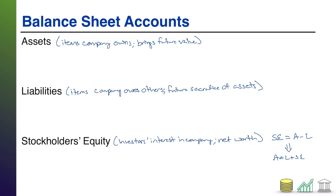So assets are things you own, liabilities are things you owe, and shareholders' equity represents the net worth of the company. The balance sheet tells investors what is the financial health of the company, specifically at a point in time — typically a quarter or year end. What are the balances in your assets and liabilities? What is the net worth of the company? Do you own more than you owe? Is your net worth positive?